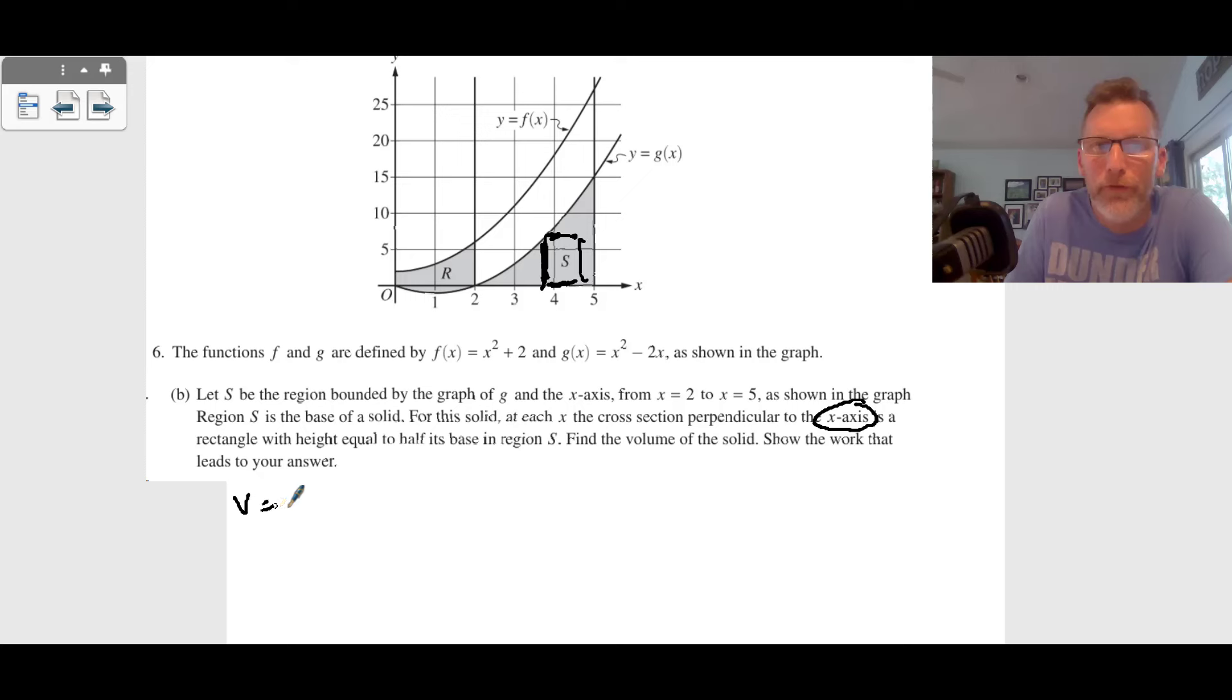So we're going to do volume equals from two to five. What is this base here? This base is going to be g(x) minus zero, so we have g(x). And then what is this height? This height is one half of g(x) minus zero. We're going to square that because it's going to be g(x) times g(x) times that one half, and this is with respect to x.